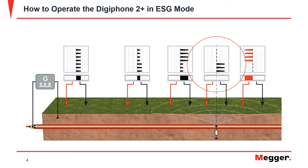If the fault is exactly between the two earth spikes or exactly to one side, the indicator unit does not display a reading. If the fault position has been passed by, the polarity changes. The signal on the indicator unit points in the opposite direction.